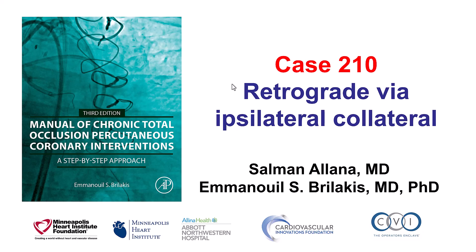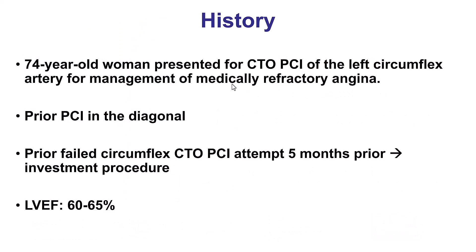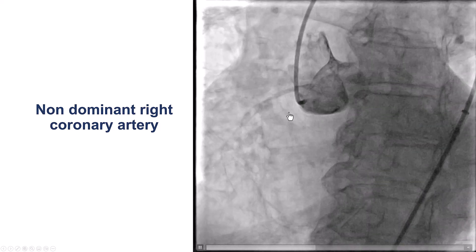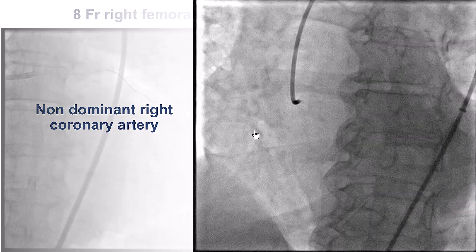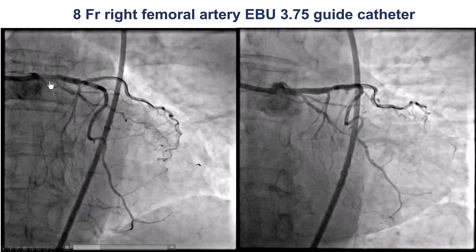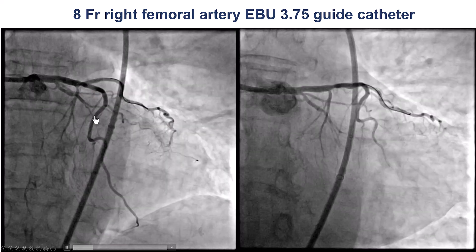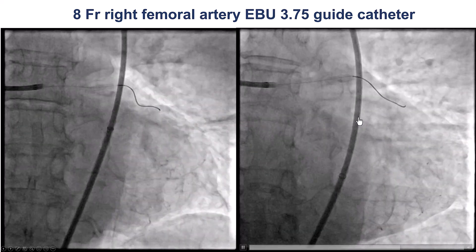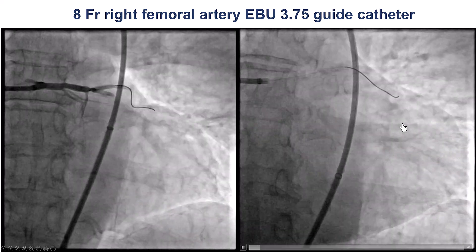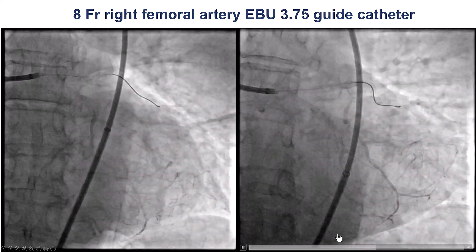This is a case of retrograde CTO crossing through an ipsilateral collateral. The patient was a woman who presented with medically refractory angina in the setting of a circumflex CTO with a prior unsuccessful attempt for re-canalization, and normal left ventricular systolic function. Coronary angiography shows a small non-dominant right coronary artery with a dominant circumflex that has a CTO in the mid-segment. The CTO has an ambiguous proximal cap, and there are collaterals from the LAD supplying the left PDA.